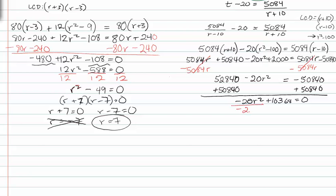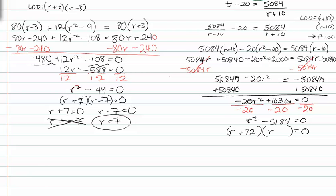We divide both terms by negative twenty and get r squared minus five thousand one hundred eighty four equals zero. This is a difference of squares, which factors as r plus seventy two times r minus seventy two. Setting each factor equal to zero gives r equals negative seventy two or r equals positive seventy two.